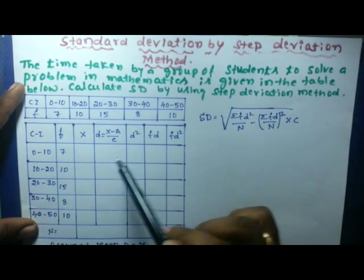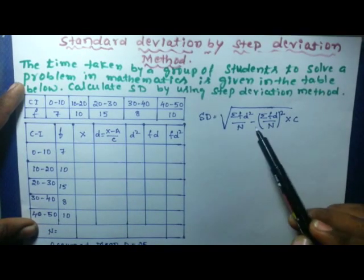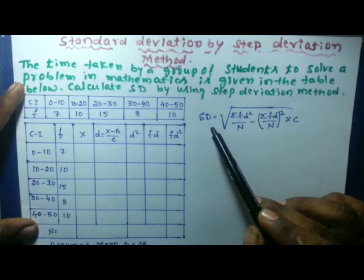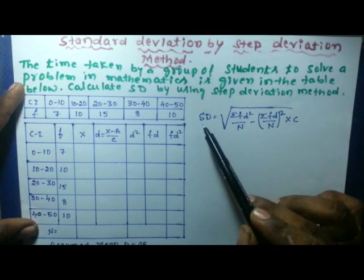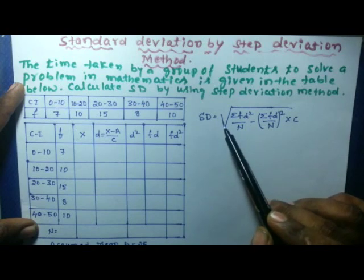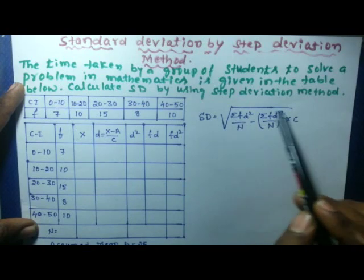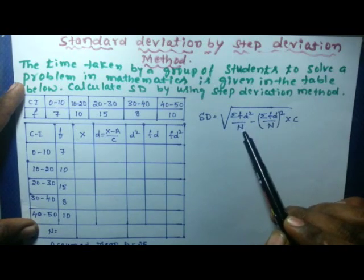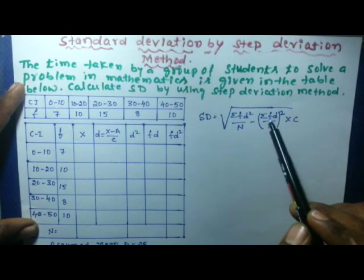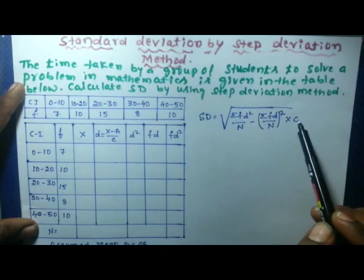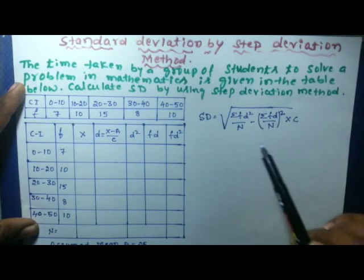To find the standard deviation using the step deviation method, the formula is: standard deviation = square root of [ (Σfd²/n) − (Σfd/n)² ] × c.